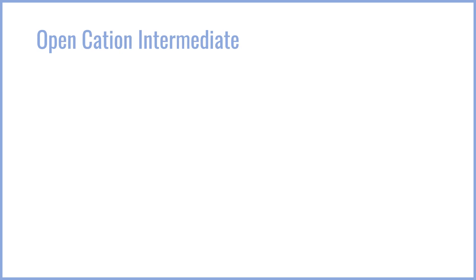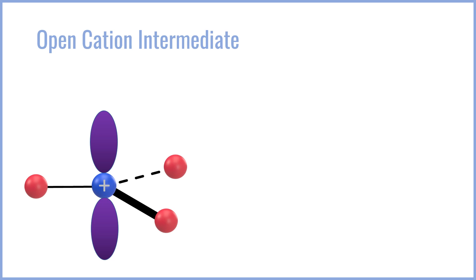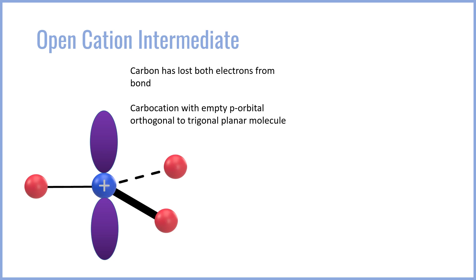The carbocation intermediate that forms when we have an SN1 reaction is often known as an open cation because it's the discrete, separate intermediate from the rest of the compounds present in the reaction. The carbon has lost both electrons from its bond and as a result is completely electron deficient. This leaves an empty p-orbital over the carbon, which has a trigonal planar molecular geometry.